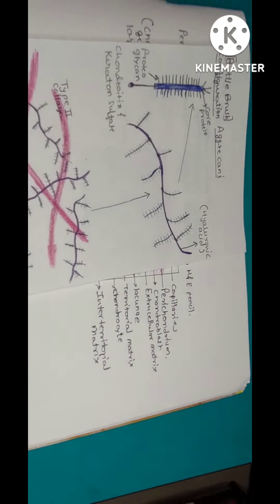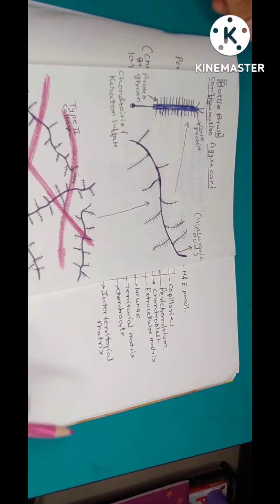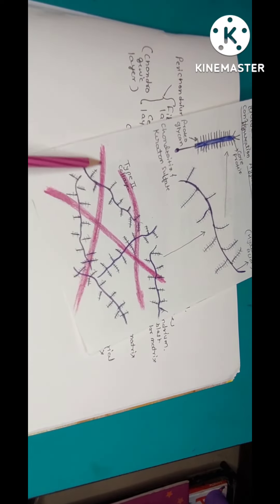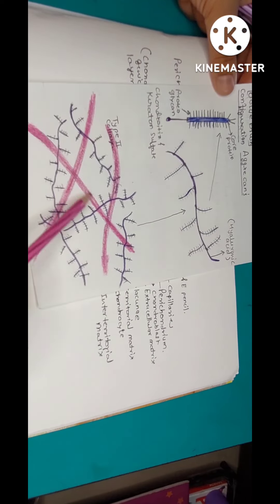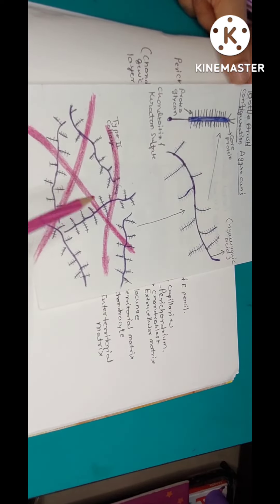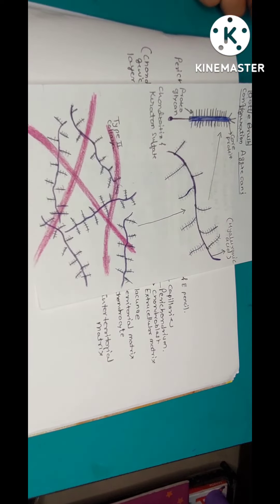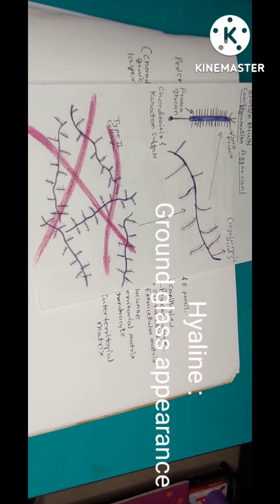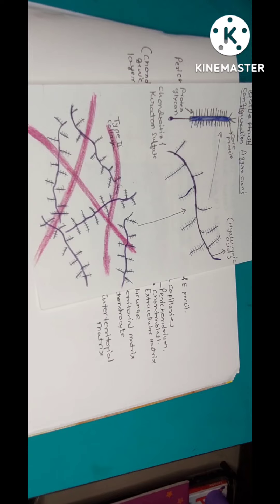As a result, metabolites and nutrients are diffused across this cartilage. Now let's see the structure of the extracellular matrix. The extracellular matrix contains type 2 collagen fibers, which are fine fibers. The refractive index of the type 2 collagen fibers and ground substance is the same, so we cannot differentiate the fibers under the light microscope. As a result of this similar refractive index, the extracellular matrix has a glass-like appearance — that is the hyaline appearance.